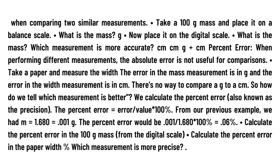This form of error is good when comparing two similar measurements. Take a 100 g mass and place it on a balance scale — what is the mass? Now place it on the digital scale — what is the mass? Which measurement is more accurate?